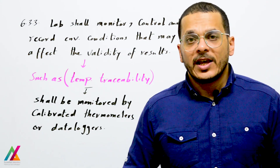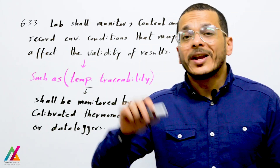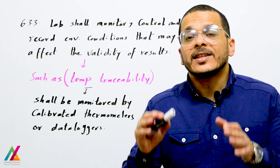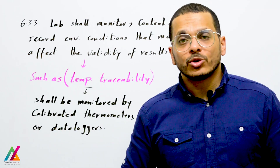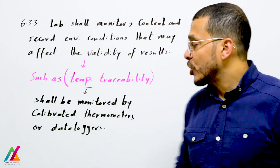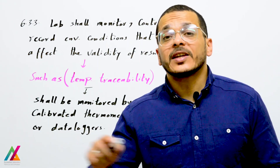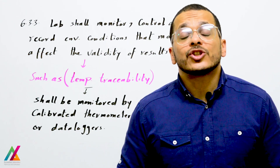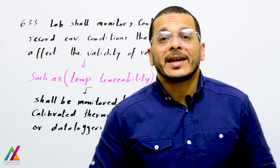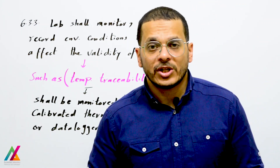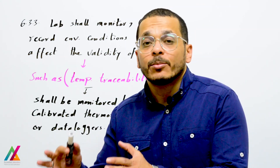The lab shall monitor, control, and record environmental conditions that may affect the validity of results. If the lab determines that any environmental condition will affect validity, they shall monitor, control, and record it. Temperature is one such condition - it shall be monitored using calibrated thermometers or data loggers, and results recorded in a specific form.